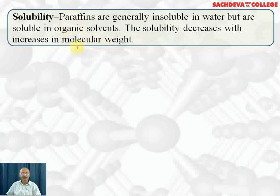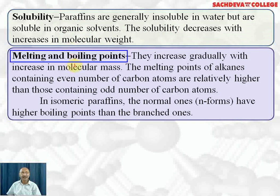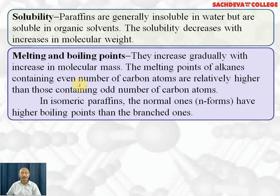Melting and boiling points of alkanes gradually increase with increase in molecular mass. The melting point of alkanes containing an even number of carbon atoms is relatively higher than those with odd numbers, because even-numbered compounds fit into the crystal lattice more readily. In isomeric paraffins, the normal straight-chain ones have higher boiling points than branched-chain ones, but in melting point, branched-chain have higher values than straight-chain because branched chains fit into the crystal lattice more readily.